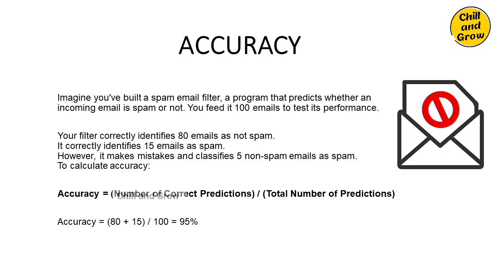How do we calculate accuracy for this model? Accuracy equals the number of correct predictions divided by the total number of predictions. The number of correct predictions is 80 (not spam, correct) plus 15 (spam, correct) equals 95, divided by 100 total emails. So your model is 95% accurate — that's a pretty good model.